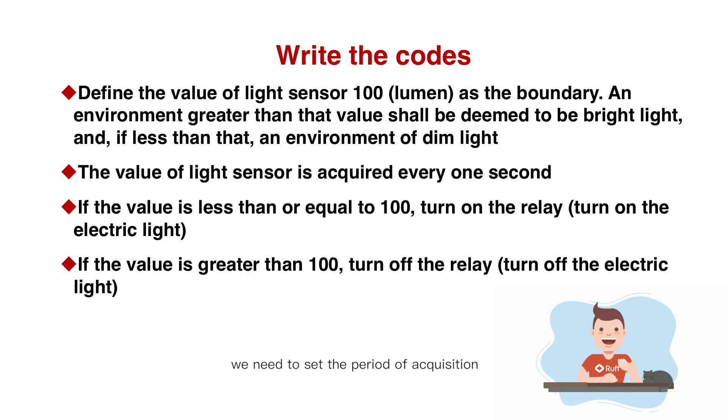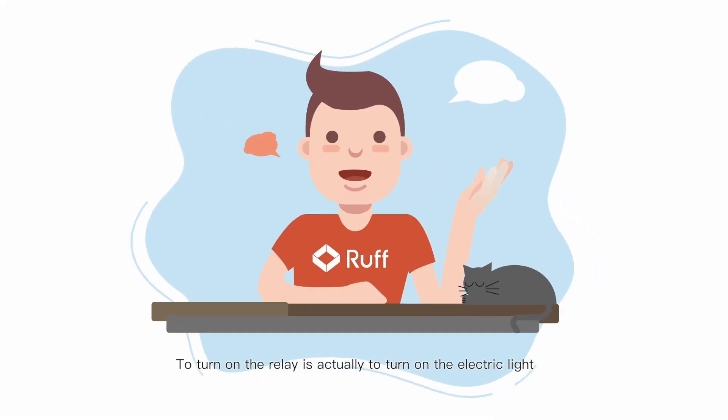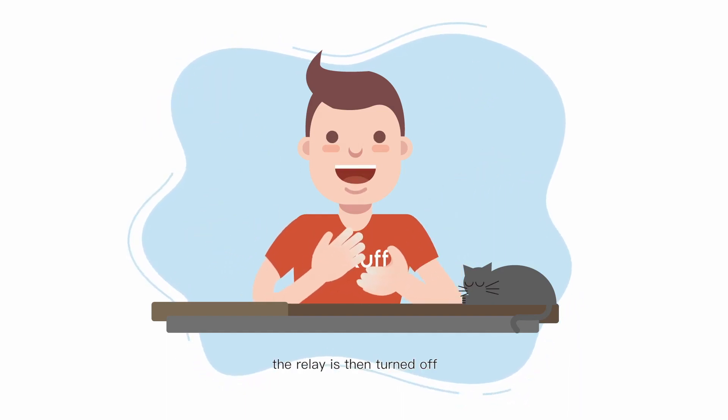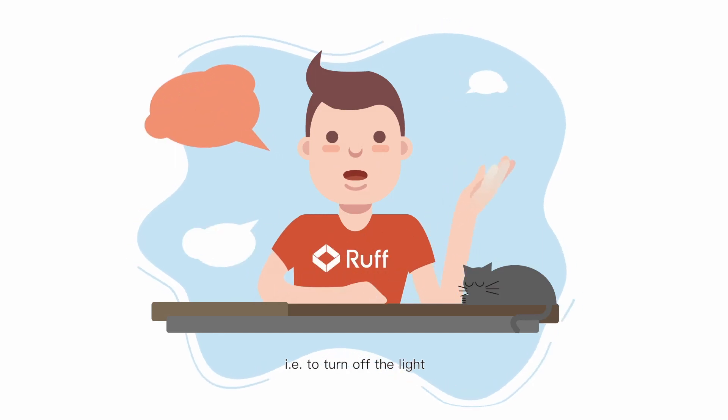Also, we need to set the period of acquisition. Here, we set it as one second. If we set that the sensor requires a numeric value every one second, and if it is less than 100, the relay is turned on. To turn on the relay is actually to turn on the electric light. If it exceeds 100, the relay is then turned off, for example, to turn off the light.